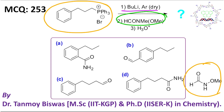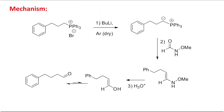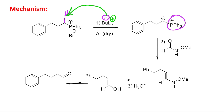Let's start the mechanism. This is a phosphonium bromide salt. When this phosphonium bromide is treated with very strong bases like butyl lithium, the butyl anion abstracts this proton and ultimately it generates a ylide. A ylide has an adjacent carbanion — this carbon is adjacent to the triphenylphosphonium cation, meaning positive and negative together.